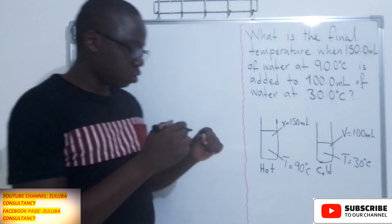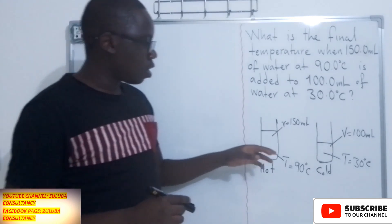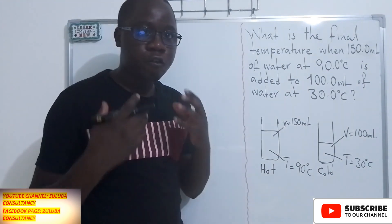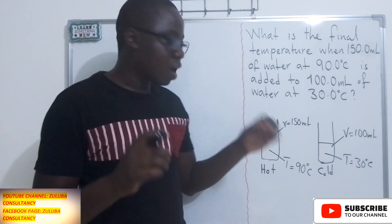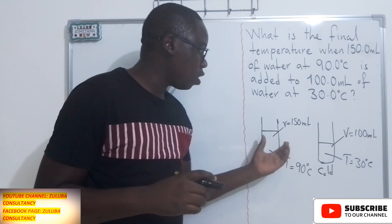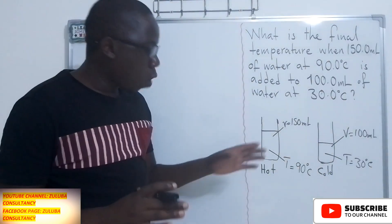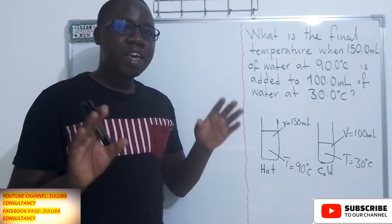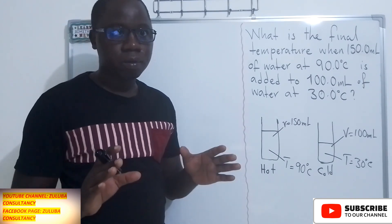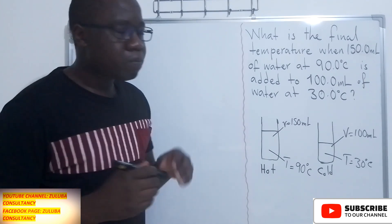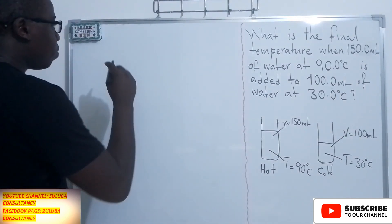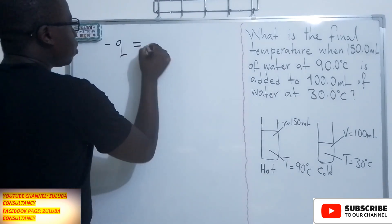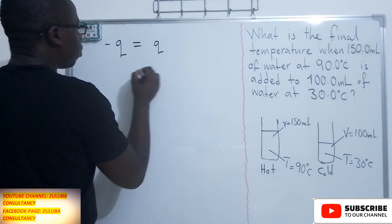After we know this information, the two are added together, and we want to find the final temperature when these two liquids are mixed. When the two liquids are mixed, we are going to notice that the heat will be at equilibrium. So the heat of the hot water should be equal to the heat of the cold water.